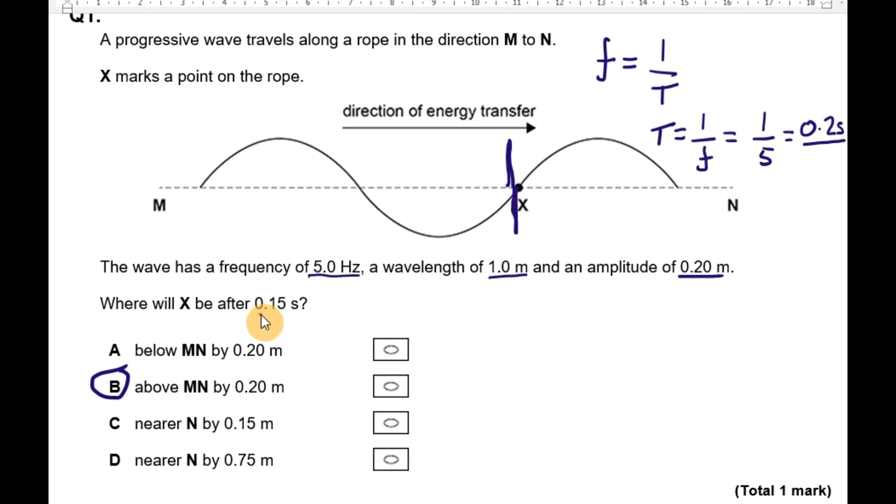We're looking at what's going to happen in 0.15 seconds, and 0.15 seconds is three quarters of that time period. So it's going to go through three quarters of its cycle.